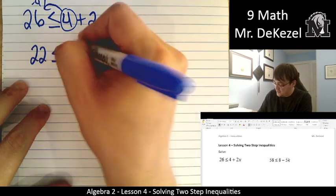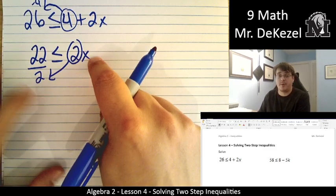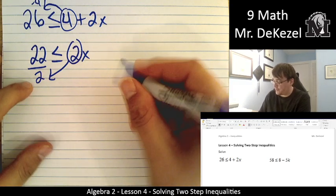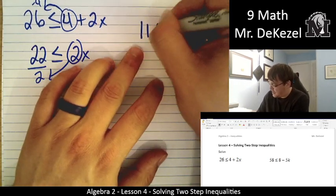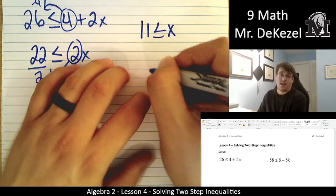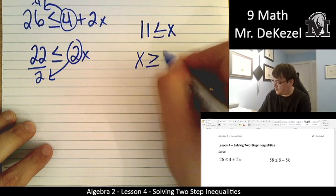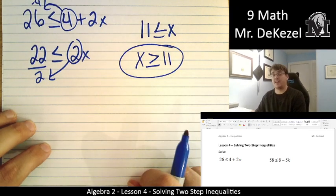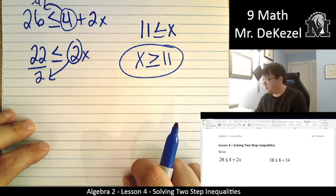Then we divide both sides by 2, or we take the 2 and we move it to the bottom. It's on the top on one side. It's on the bottom on the other. 22 divided by 2 is 11. So that's 11. It's less than or equal to x. And we flip it around so x is on the left. x is greater than or equal to 11. Okay, so more than one step, but not too complicated.